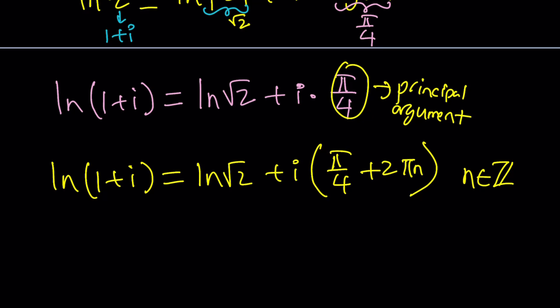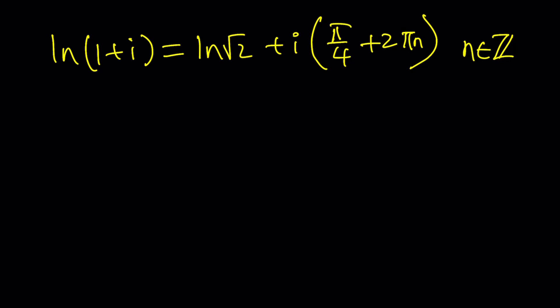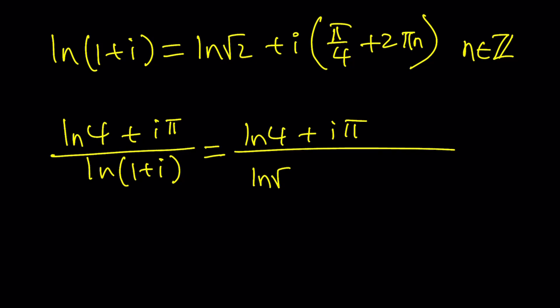Now, that kind of looks complicated, doesn't it? But if you take a special value, then it's going to be a little better. Let's go ahead and make the substitutions. Now, we have ln 4 plus i pi divided by ln 1 plus i. Now, we're going to go ahead and replace the bottom one with what it is, ln 4 plus i pi. And at the bottom, we have ln root 2 plus i times pi over 4 plus 2 pi n.